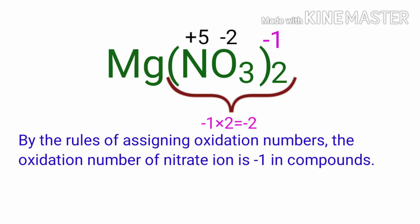As per the rule of assigning oxidation numbers, the sum of the oxidation numbers of the atoms in a neutral compound is equal to zero. So to nullify the charge, we can write the oxidation number of magnesium is plus two.